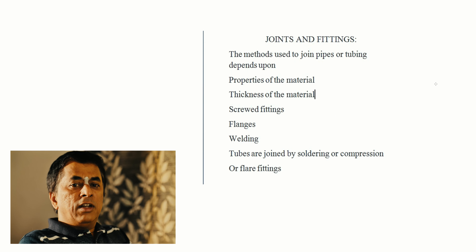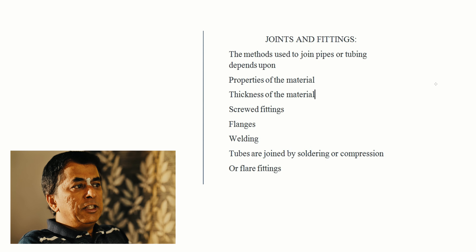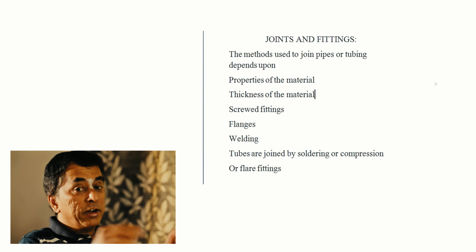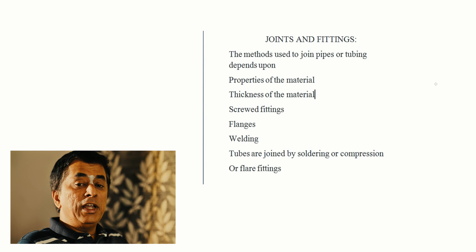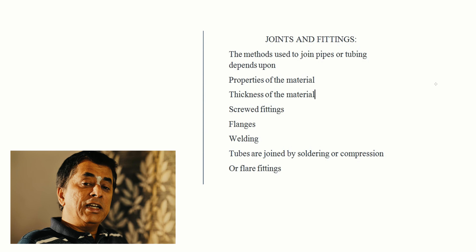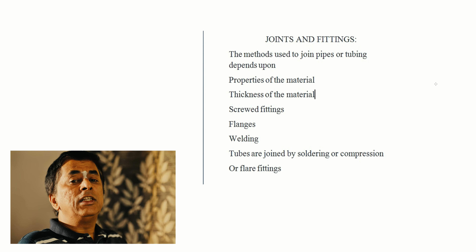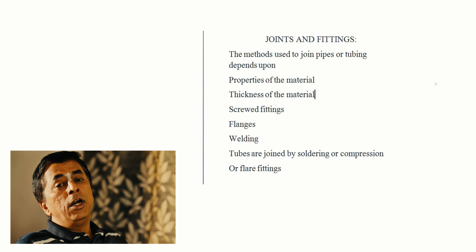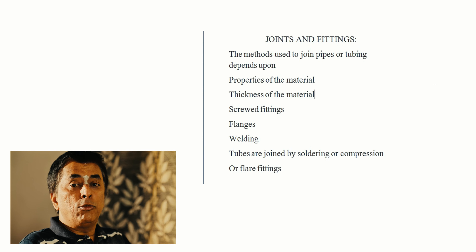In this section, we will see how to join two pipelines. The joining method depends on the material of construction, the wall thickness, and the internal diameter of the pipeline. All these factors determine what type of fitting or instrument can be used to join the pipes together.